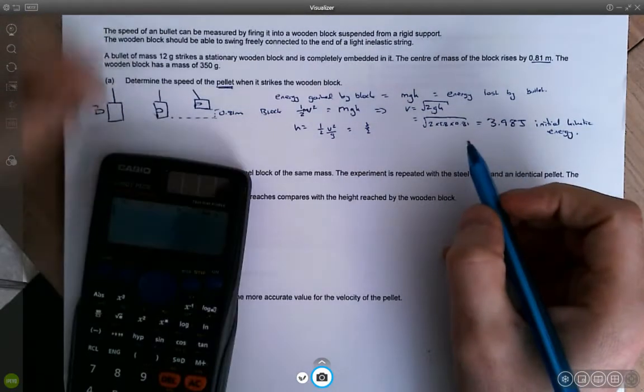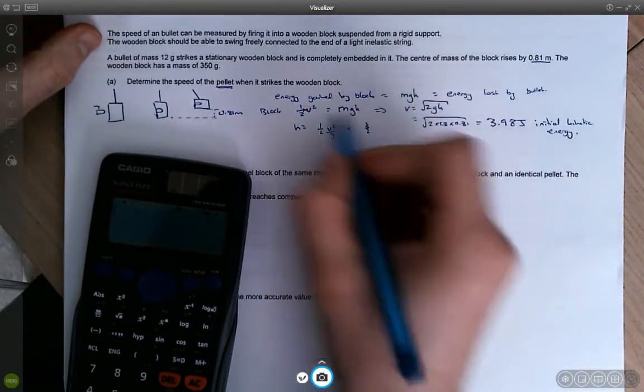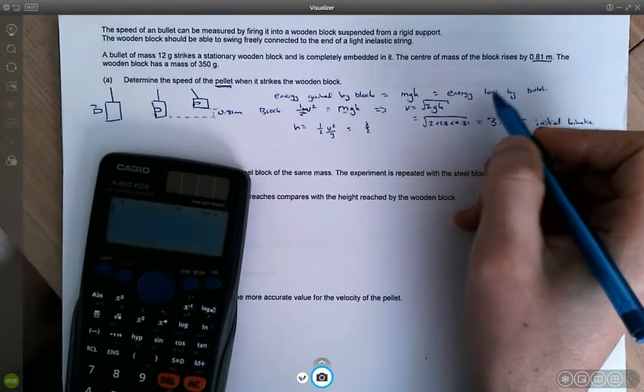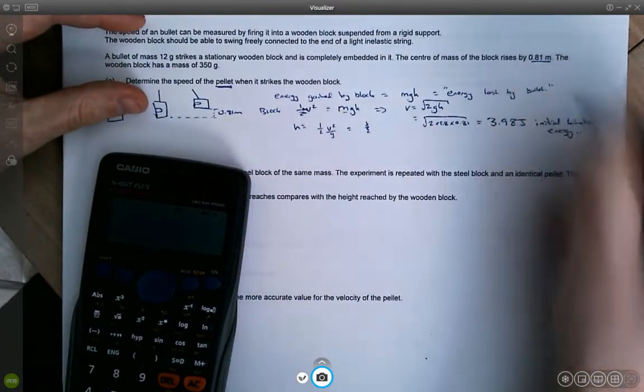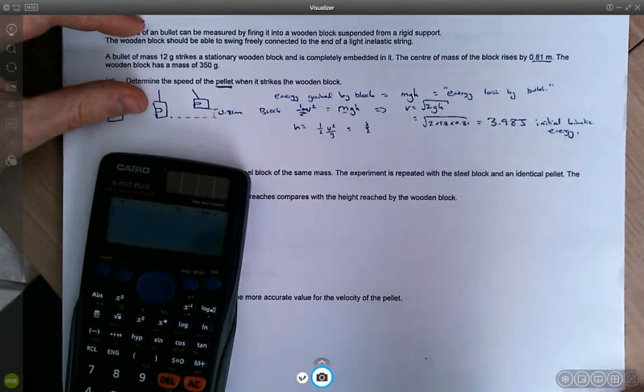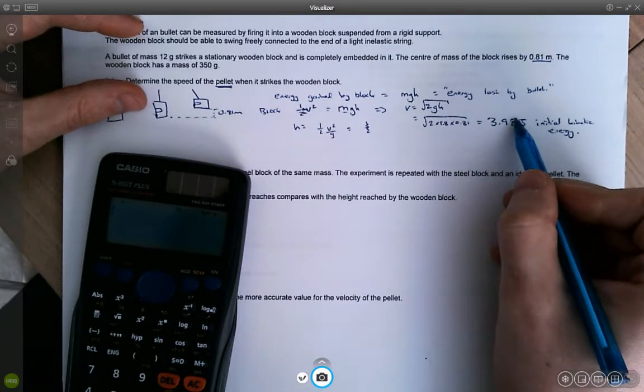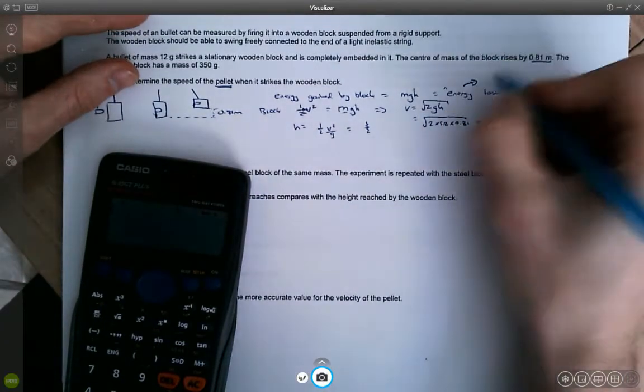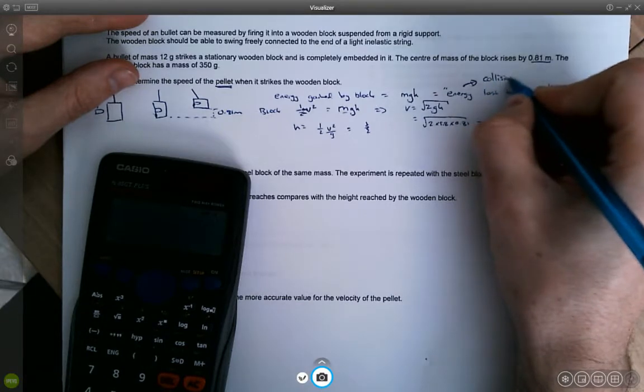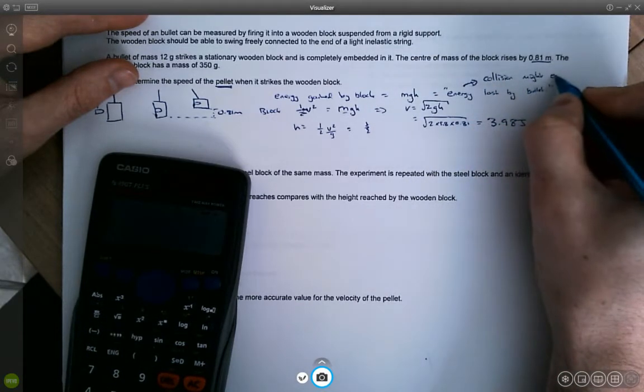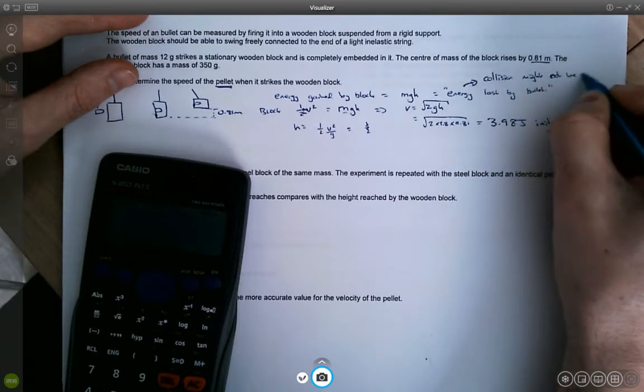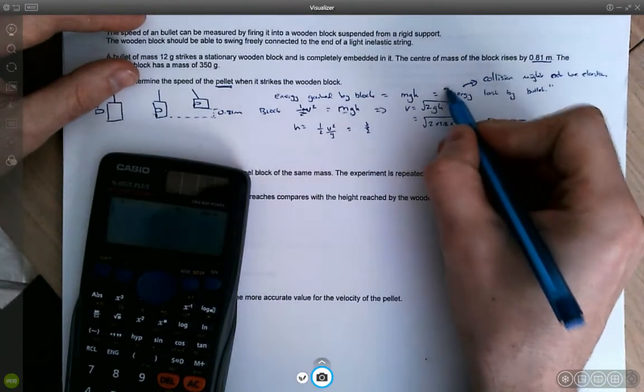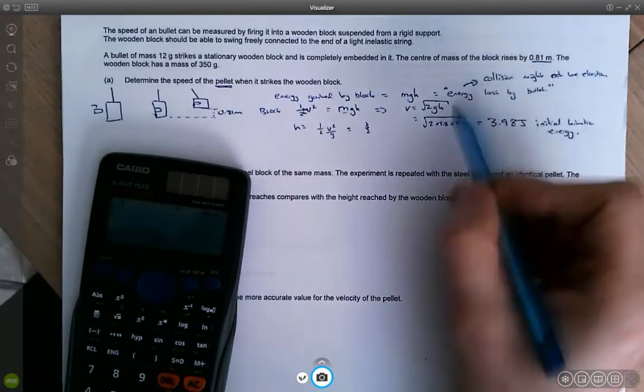Now you might say, why have I done this equation with the mass of the block when I've said that it's actually equal to the energy lost by the bullet? Well, this isn't actually strictly 100% true. And if I equate this energy to the energy of the bullet and rearrange for the velocity, I'm not going to get the correct answer. And the reason it's not entirely true is because the collision might not be entirely elastic, which means that the kinetic energy might not all be conserved, in which case, even though the bullet is losing energy, it doesn't necessarily make it move.